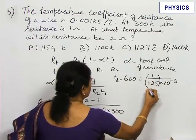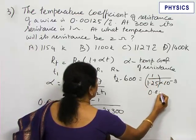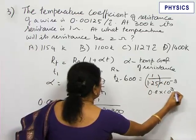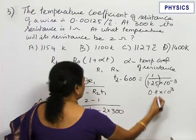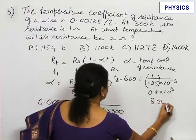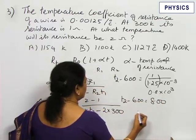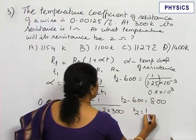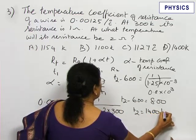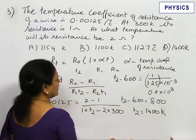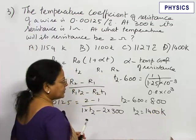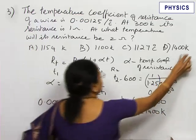1 by 1.25 is 0.8. This becomes 0.8 into 10 power 3, which is equal to 800. T2 minus 600 equals 800, or T2 is 1400 Kelvin.